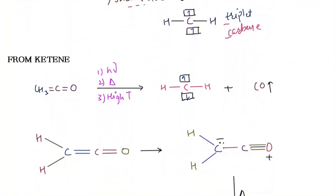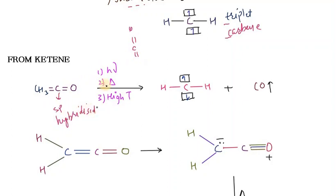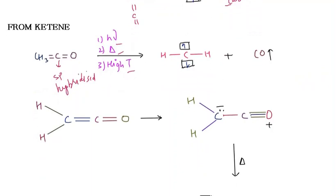The next method involves ketene. In ketene, carbon is sp-hybridized and there is a next double bond. All three conditions are again needed: presence of light, heat, and higher temperature. Under these conditions, carbene is formed and carbon monoxide gas moves out of the solution.